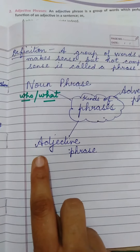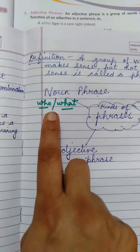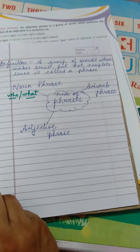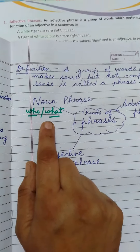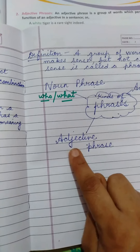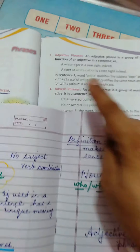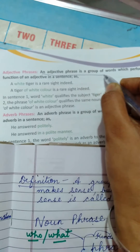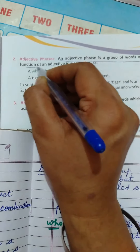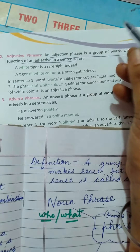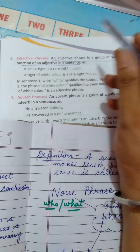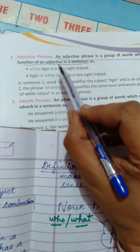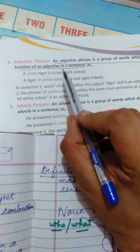Please write down here: adjective phrase. We have already learnt the noun phrase. In a noun phrase, it asks the question who or what to the verb. Now the second kind of phrase is adjective phrase. An adjective phrase is a group of words which performs the function of an adjective in a sentence — telling more about a noun or pronoun.